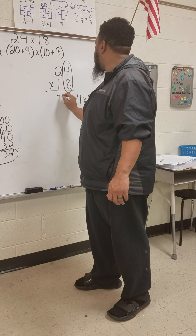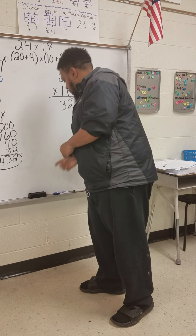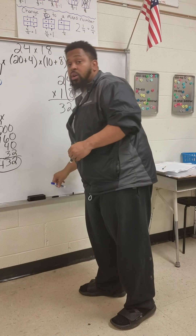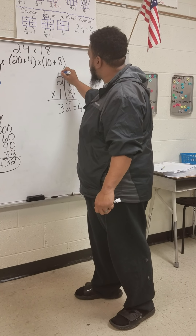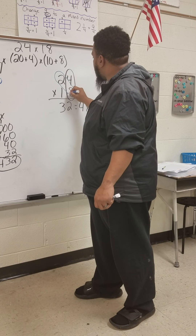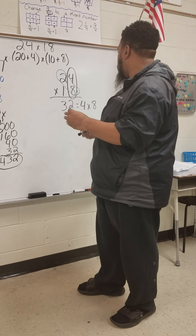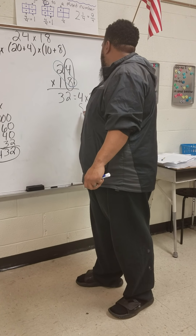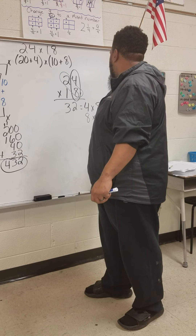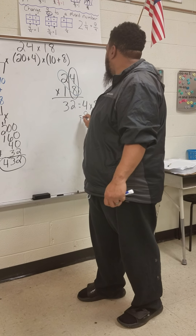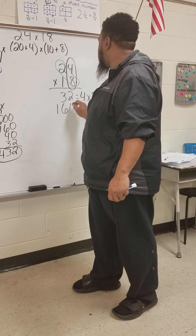4 times 8 gives us 32. Then with another marker, I'm going to circle the ones place times the tens place. So this time we have 8 times 20, and 8 times 20 gives us 160.